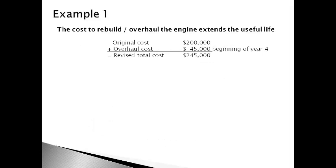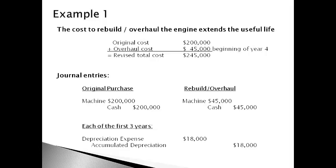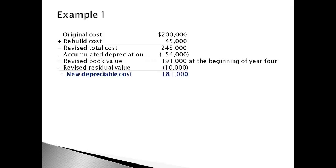The cost to rebuild increases future benefit by extending the useful life and is added to the original cost of the machine at the beginning of year four. Depreciation expense is also added to the contra account accumulated depreciation during each of the first three years. The new total cost less total accumulated depreciation to date is used to compute the new revised book value. The revised book value less the new estimated residual value gives the new depreciable cost for future depreciation.